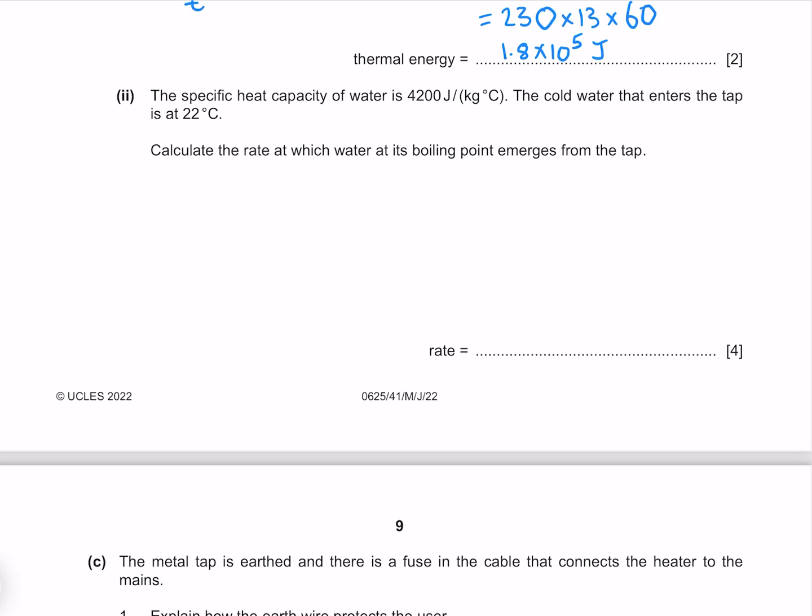The specific heat capacity of water is 4200 joules per kilogram degree Celsius. The cold water that enters the tap is at 22 degrees Celsius. Calculate the rate at which water at its boiling point emerges from the tap. We know that our energy is equal to our mass times the specific heat capacity times our change in temperature. Solving that for mass by dividing both sides by C delta T, where our water is going from 22 degrees Celsius up to a temperature of 100 degrees Celsius, giving us a difference of 78 degrees Celsius.